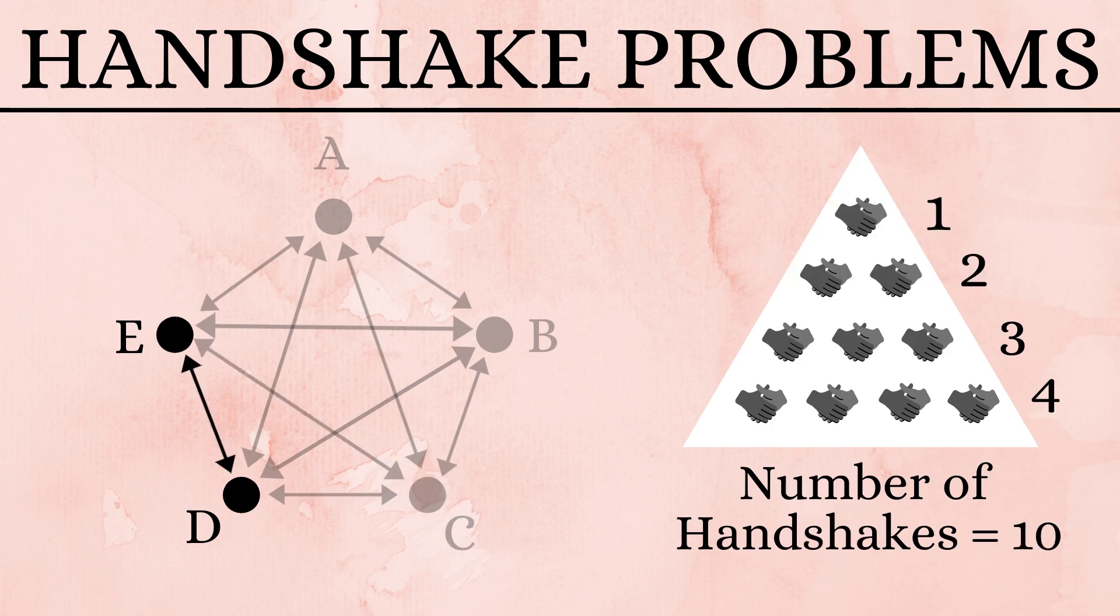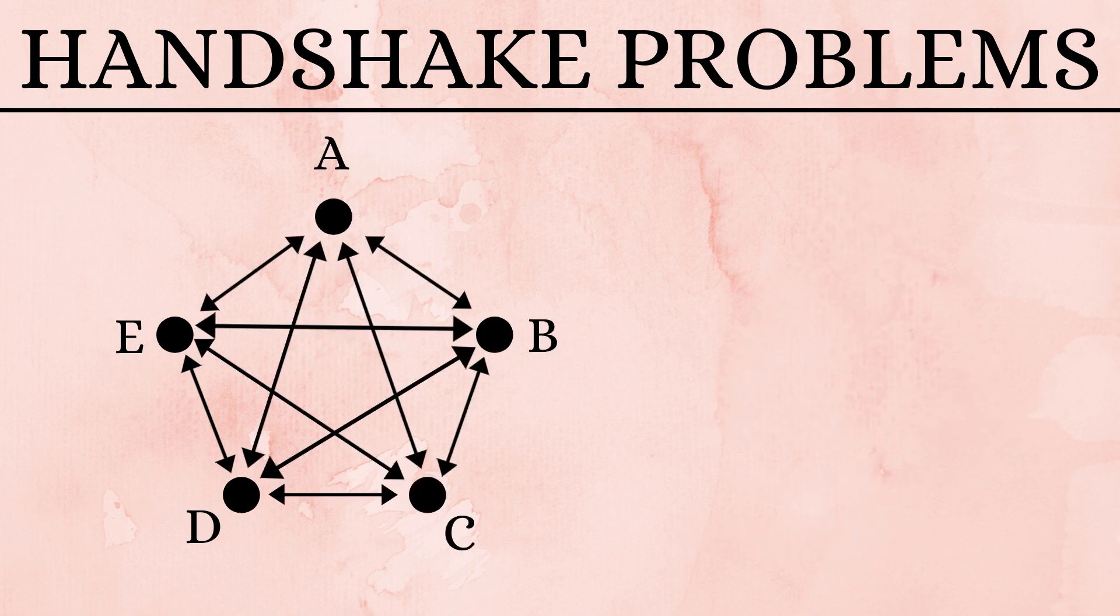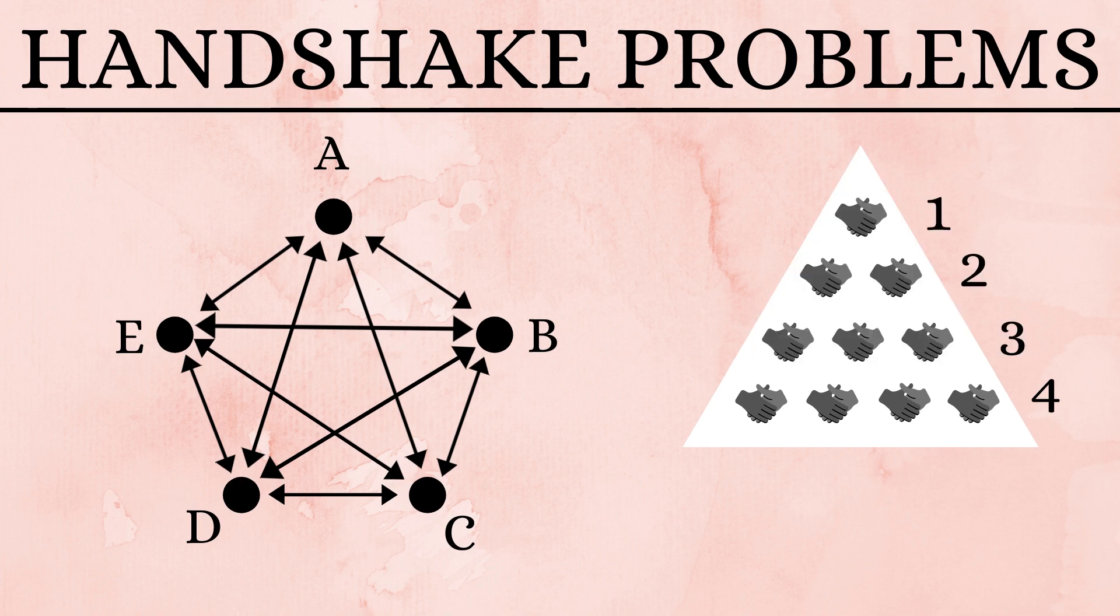And finally, D and E have a handshake. So for five people, we have four plus three plus two plus one, which is ten handshakes.